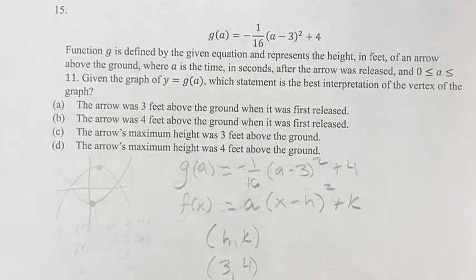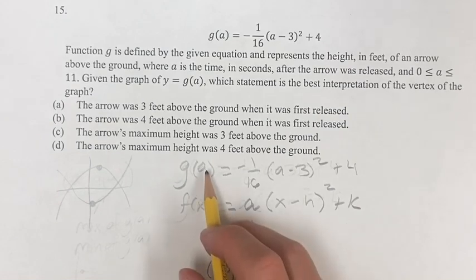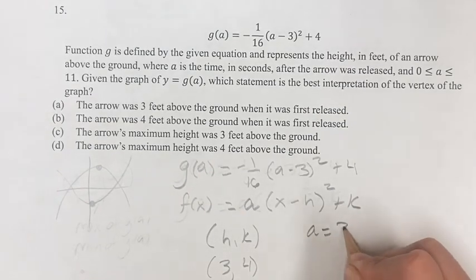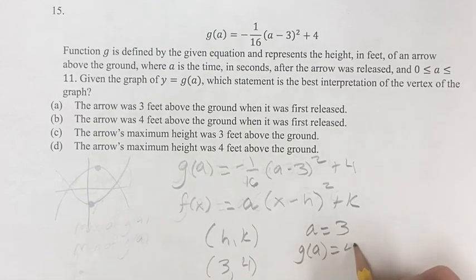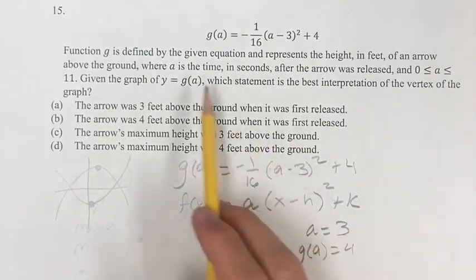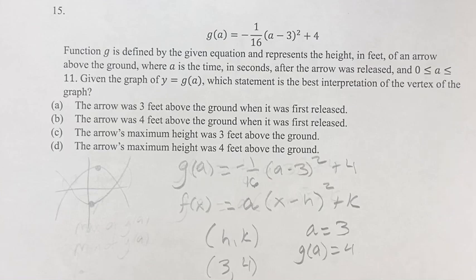So again, what does this actually mean? Okay, so a in this situation is 3, and when a is 3, g of a is 4. And so if a is 3 seconds after the arrow is released, g of a is 4 feet.